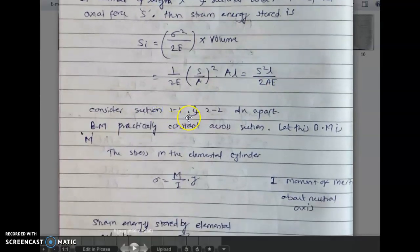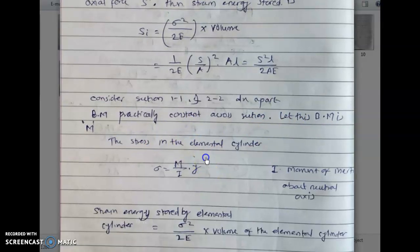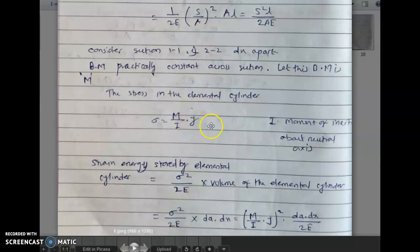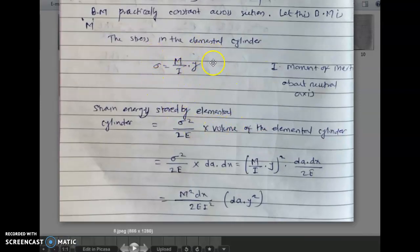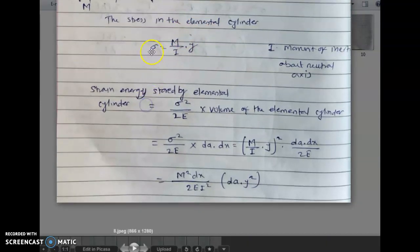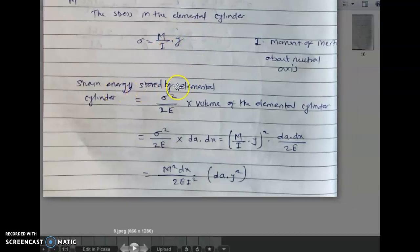Consider sections 1-1 and 2-2 a distance dx apart; the bending moment is practically constant across the section. Let this bending moment be M. The stress in the elemental cylinder is sigma equals M upon I into y, where I is the moment of inertia about the axis and y is the distance from the neutral axis. This is the basic bending stress formula.